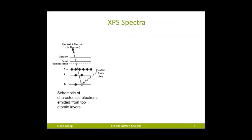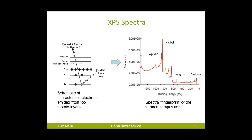XPS achieves surface sensitivity by shining a monochromatic X-ray beam onto the surface of a sample in a high vacuum chamber. The X-ray beam causes signature electrons in the elements on the top surface to be emitted and collected. These signature electrons have a specific energy spectra or fingerprint depending on the element and its chemical bonding state. This fingerprint of surface atom configuration is then interpreted by computer analyses and the experience of XPS surface scientists to determine the elements and chemical states on the surface of a material.